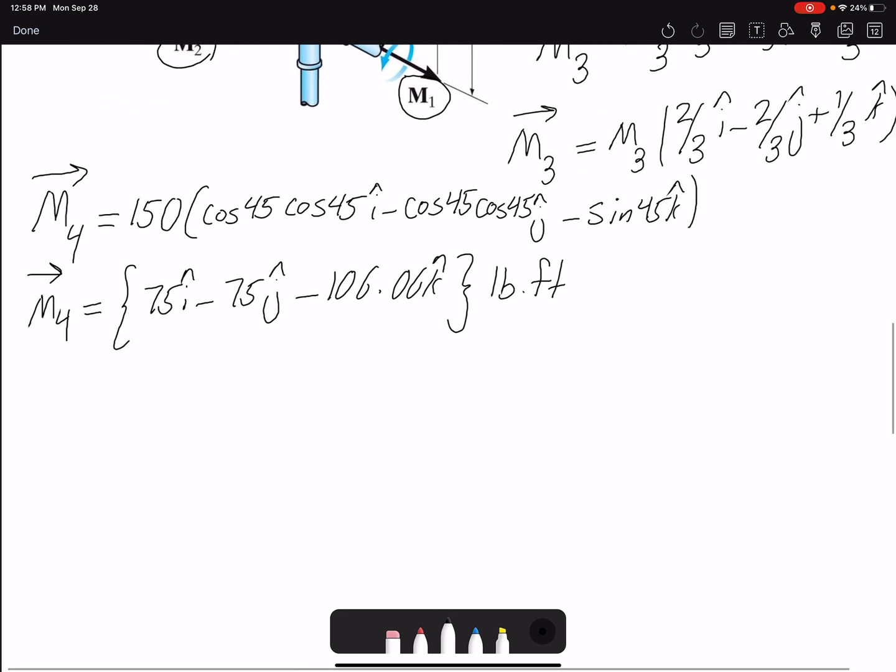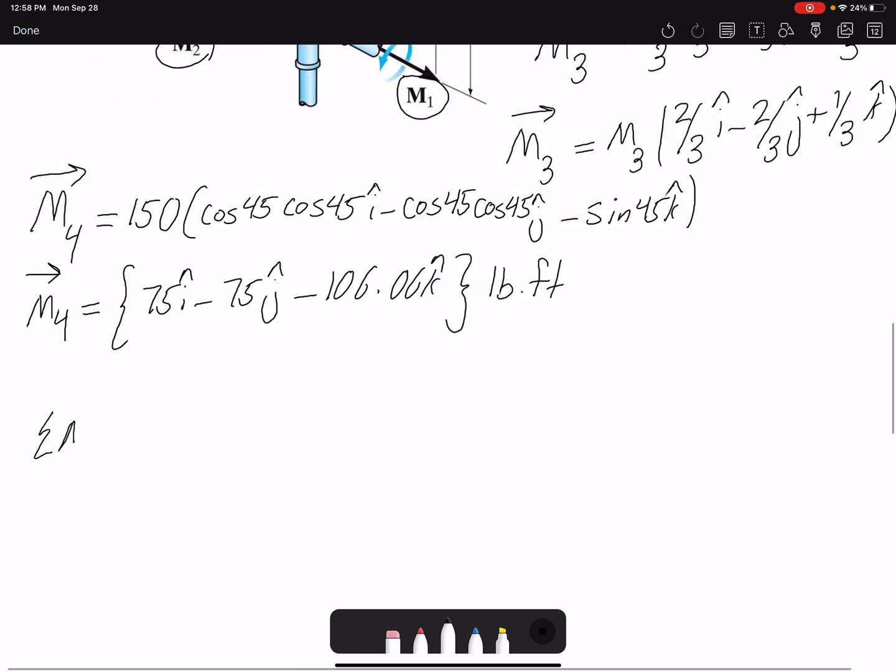So for the summation of moment to be zero, because moment is a vector, all the components in i, j, and k should be zero. So technically this is three equations.